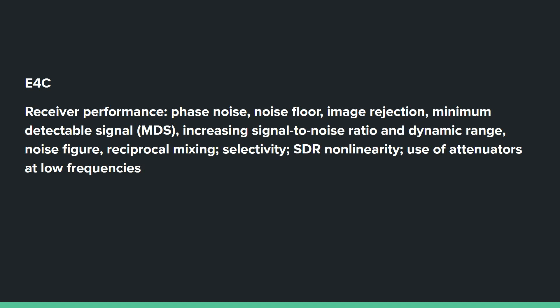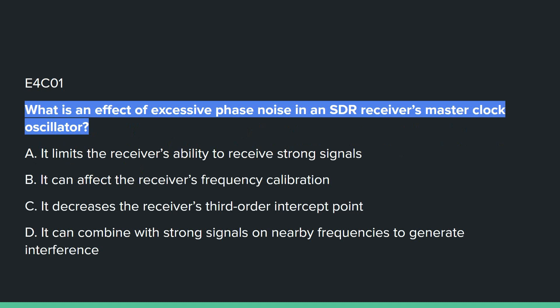E4C covers receiver performance: phase noise, noise floor, image rejection, minimum detectable signals, increasing signal-to-noise ratio and dynamic range, noise figure, reciprocal mixing, selectivity, SDR, non-linearity, and use of attenuators at low frequencies.